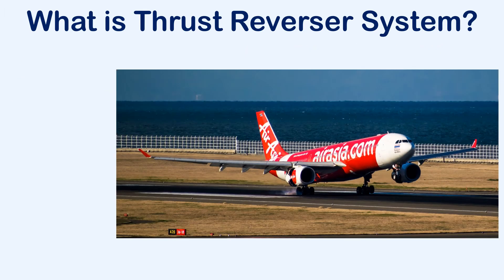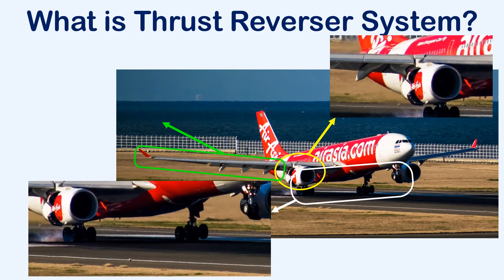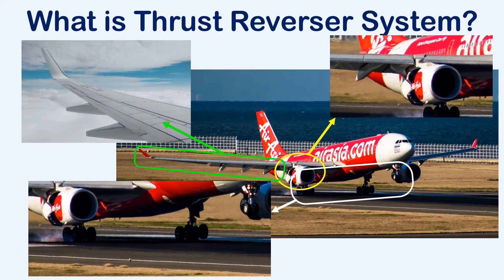As soon as the aircraft lands on the runway, the thrust reversers are deployed in order to increase the drag force that is acting on the aircraft. The thrust reversers are used along with the brakes and the ground spoilers in order to reduce the speed of the aircraft until it reaches a safe speed for taxiing.